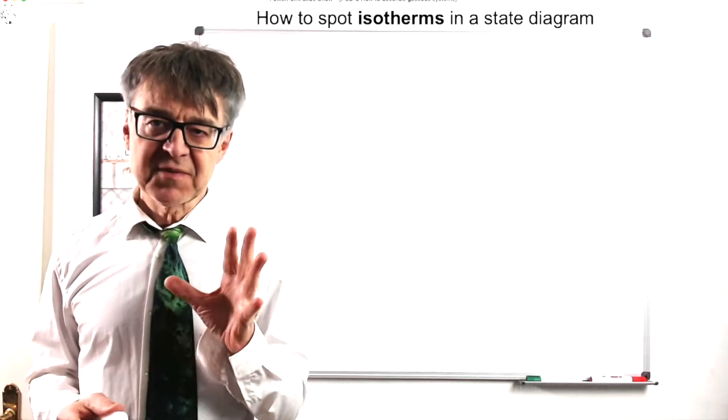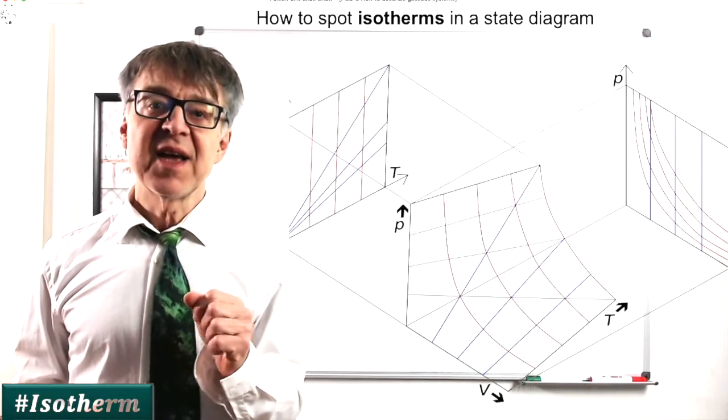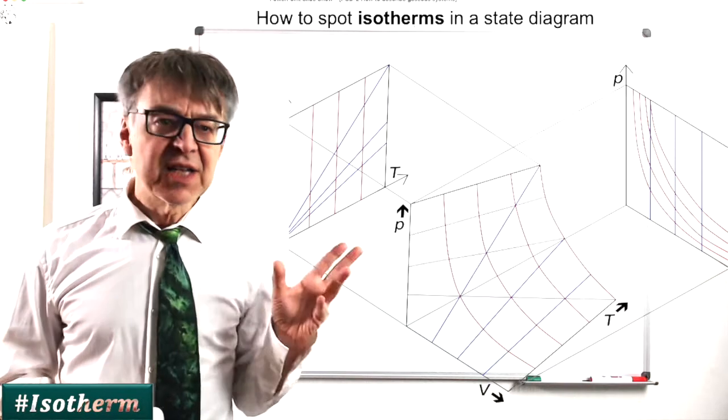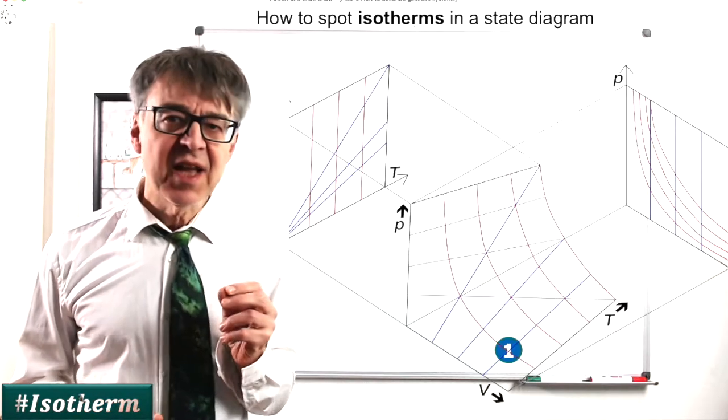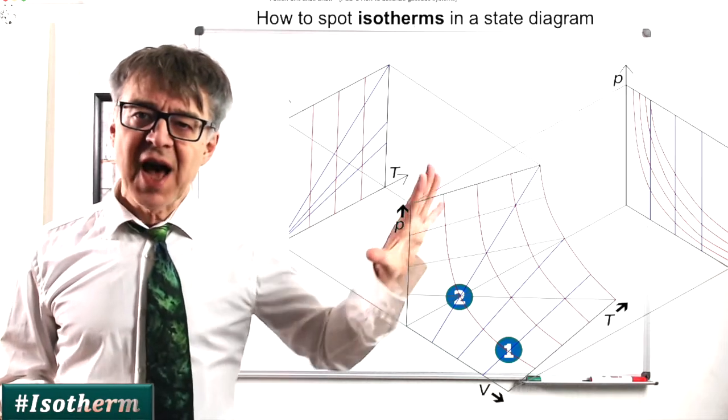Compression, more specifically isothermal compression, can easily be visualized in the phase diagram. Initial and final state of such a process 1 and 2 lie on a hyperbola.